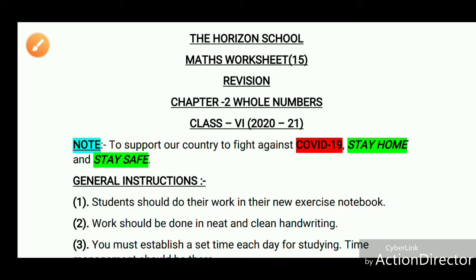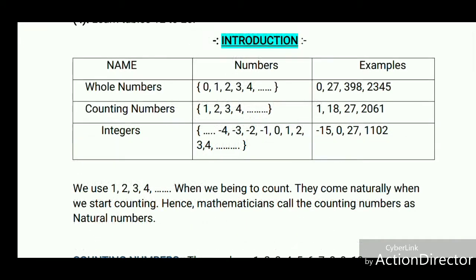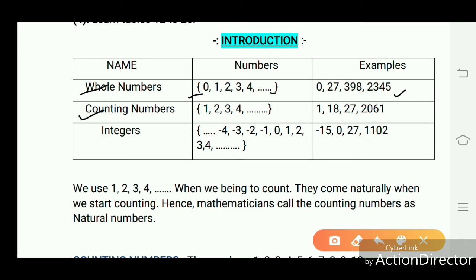Hello students, this is a revision worksheet related to Chapter 2: Whole Numbers. Whole numbers are numbers included with 0 — that is, 0, 1, 2, 3, 4 and other numbers. Examples: 0, 27, 398, 2345.